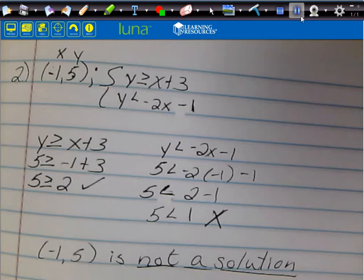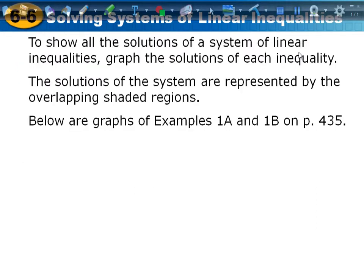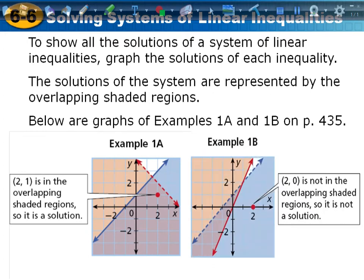Now we're going to graph and solve systems. To show all the solutions of a system of linear inequalities, graph the solutions of each inequality — the solutions of the system are represented by the overlapping shaded region. If two lines are both shaded below, the overlapping area is the solution. A point in the non-overlapping region would not be a solution because it's being shaded by only one of them.